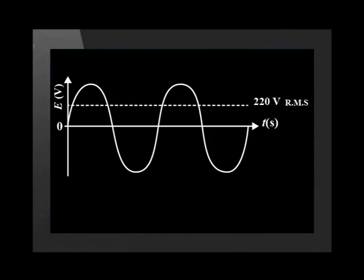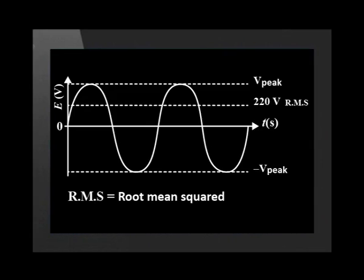The other marking you would have seen on the cell phone charger is 220 VAC, or 220 volts alternating current. The 220 is the average voltage — the correct term for this average is the RMS voltage. RMS stands for root mean square, which clearly means that sometimes the voltage is actually higher than 220 volts.